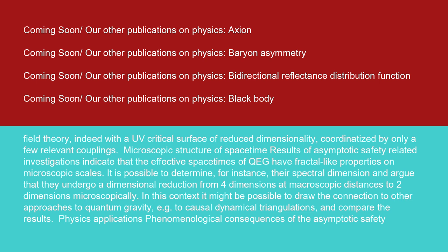Microscopic structure of space-time: results of asymptotic safety-related investigations indicate that the effective space-times of QEG have fractal-like properties on microscopic scales. It is possible to determine, for instance, their spectral dimension and argue that they undergo a dimensional reduction from four dimensions at macroscopic distances to two dimensions microscopically. In this context, it might be possible to draw the connection to other approaches to quantum gravity, e.g. to causal dynamical triangulations, and compare the results.